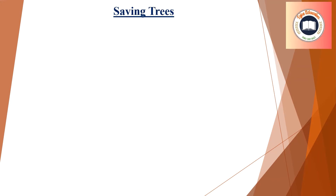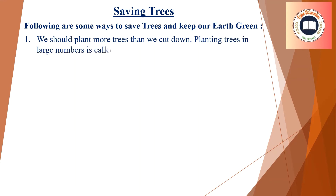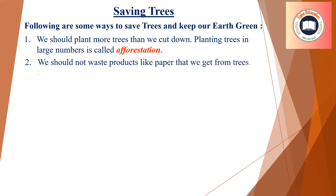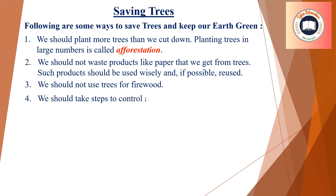Saving trees. Following are some ways to save trees and keep our earth green. We should plant more trees than we cut down. Planting trees in large numbers is called afforestation. We should not waste products like paper that we get from trees. Such products should be used wisely and if possible reused. We should not use trees for firewood, and we should take steps to control and prevent forest fires caused during the summer months.